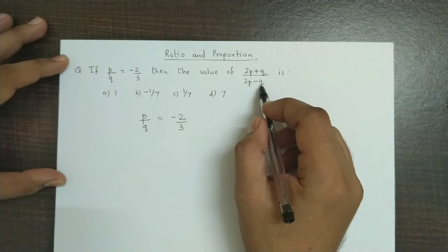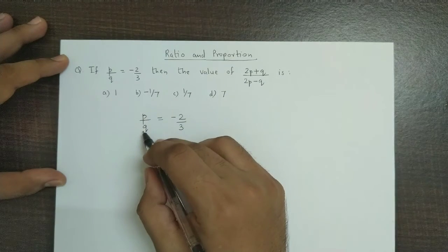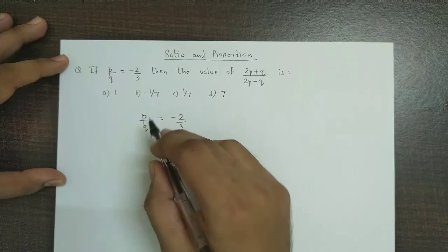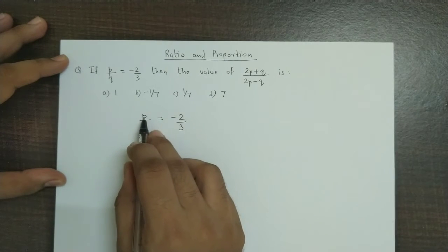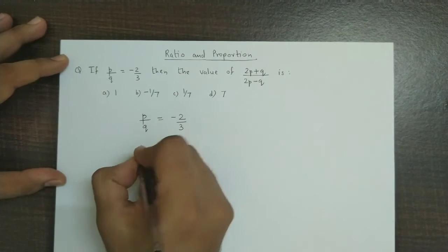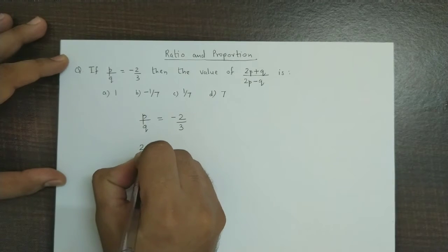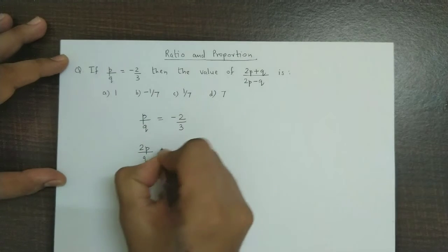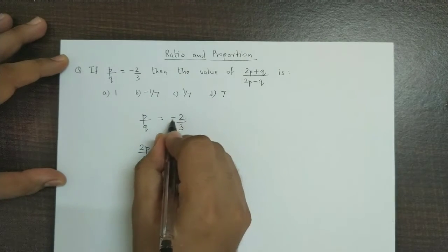But here we have p/q, so what we do is multiply the numerator by 2 on both sides. So we obtain 2p/q is equal to... and here if you multiply by 2, we get -4/3.